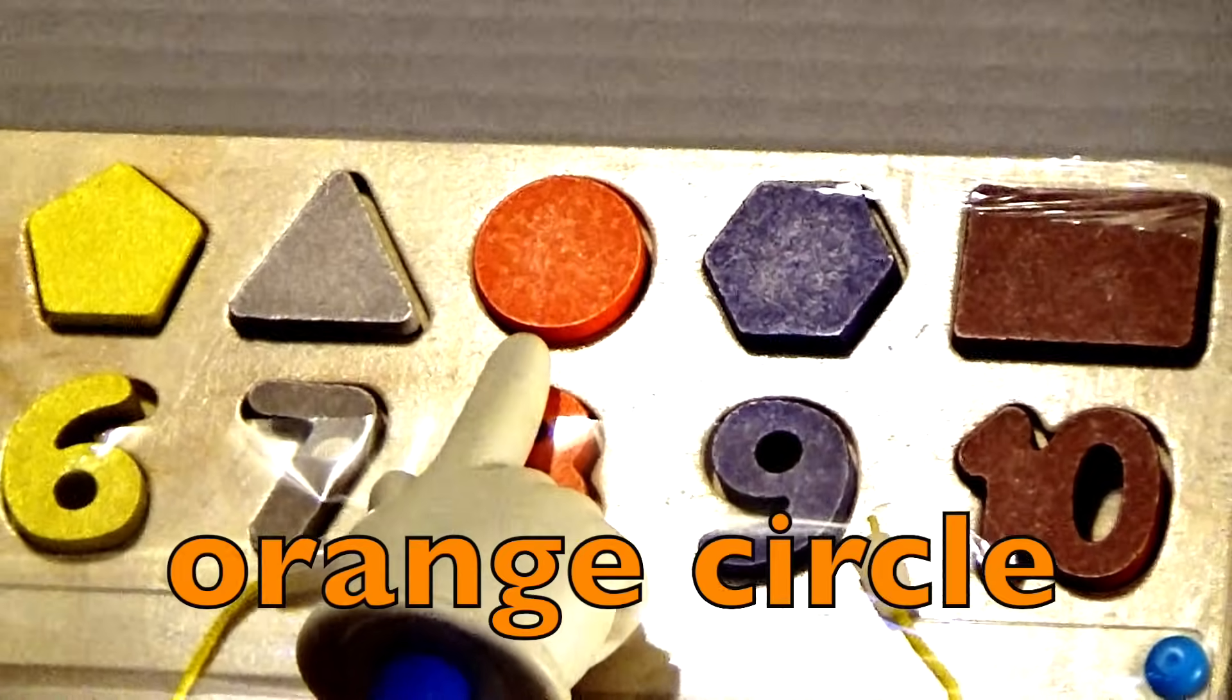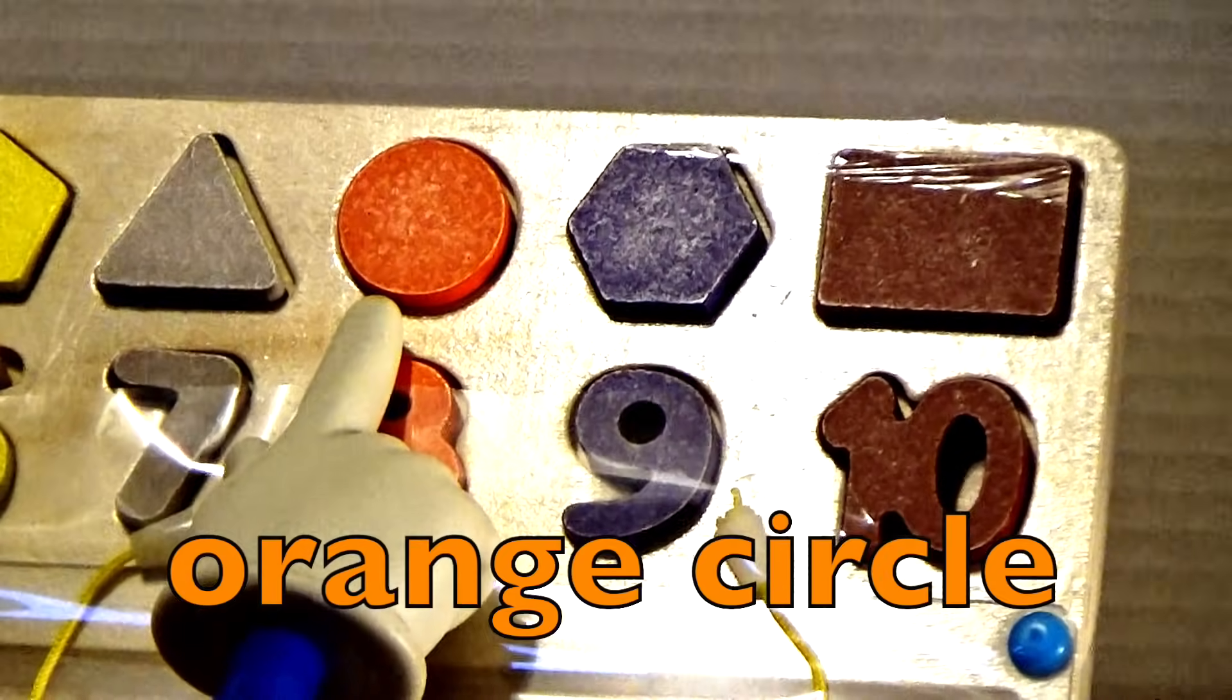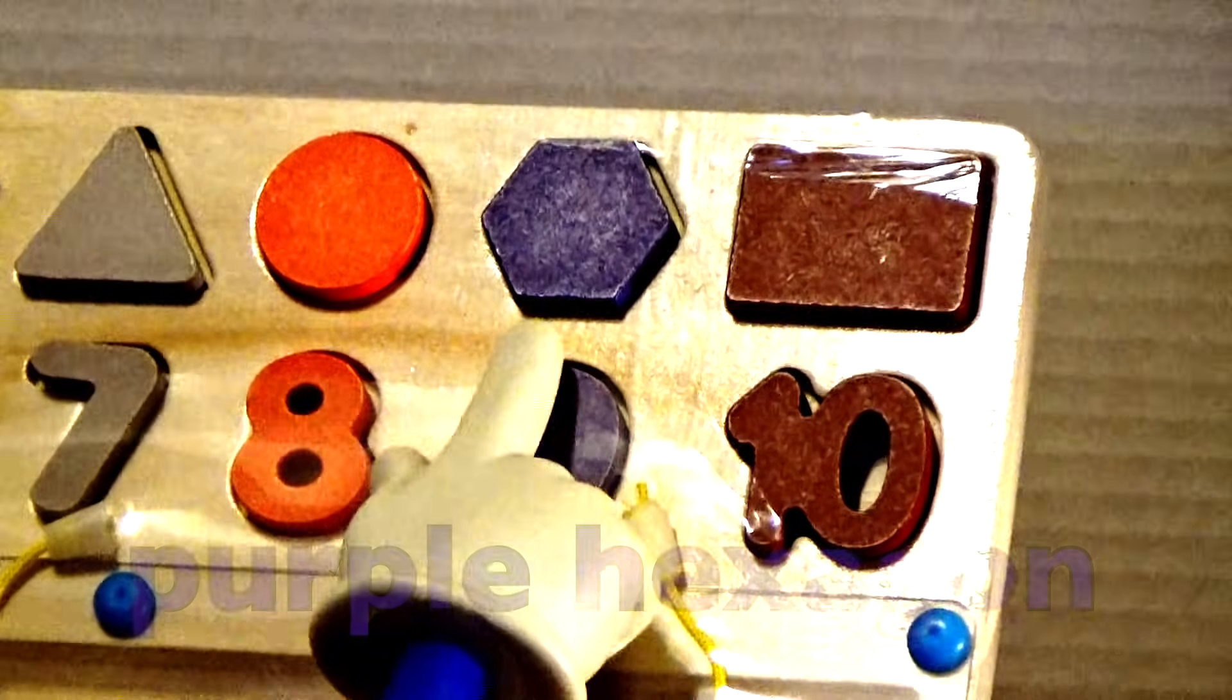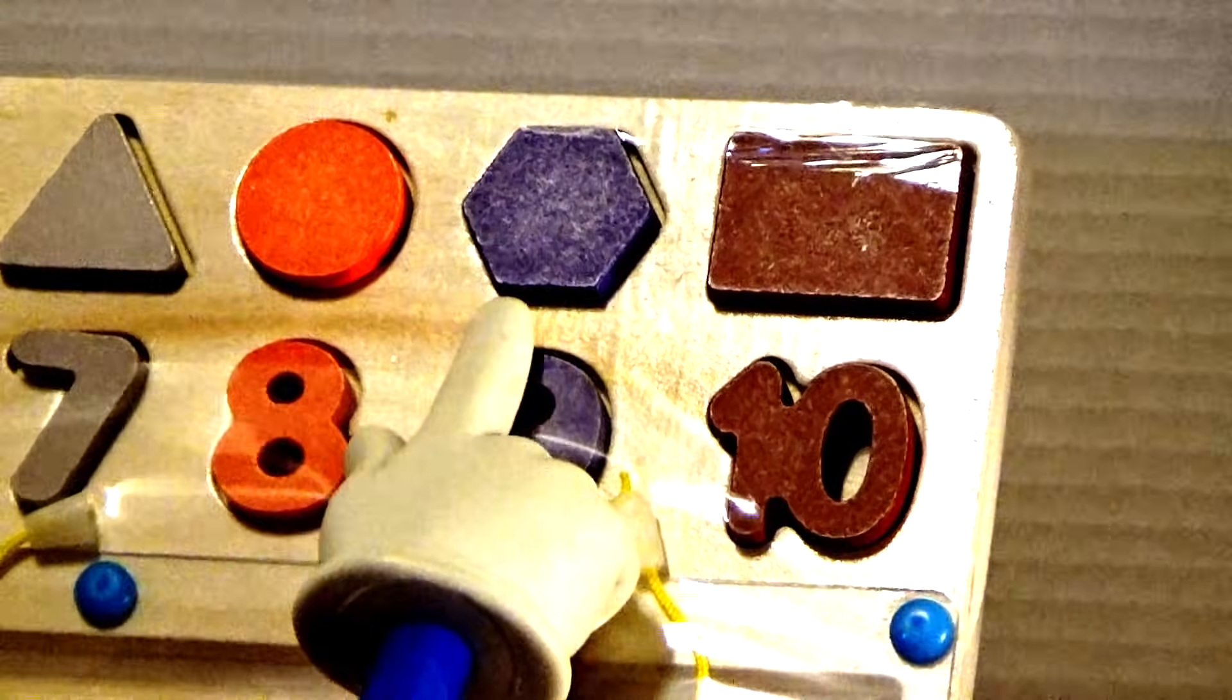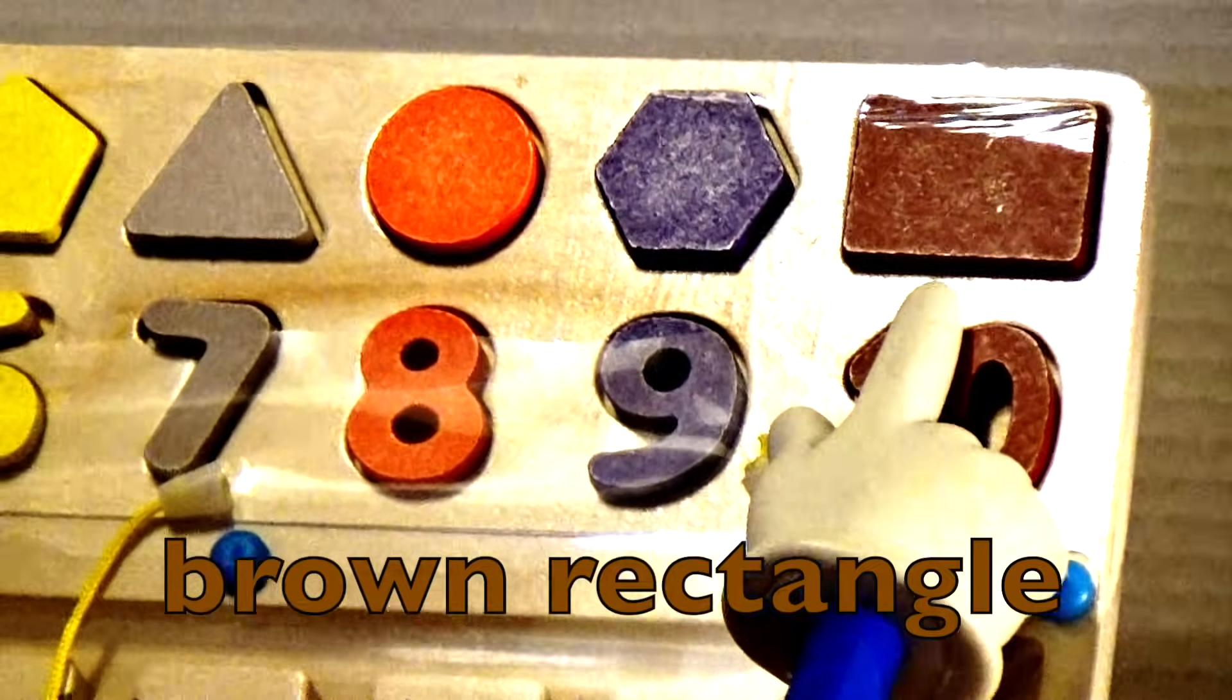Here is our what? Do you remember what I call that before? An orange circle. This is a purple hexagon. And here we have a rectangle.